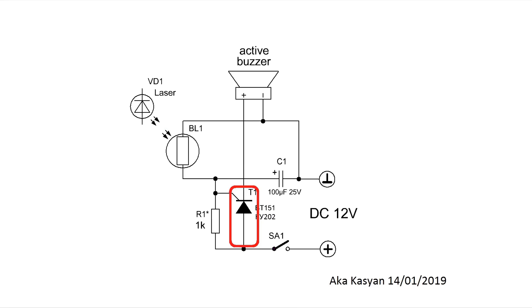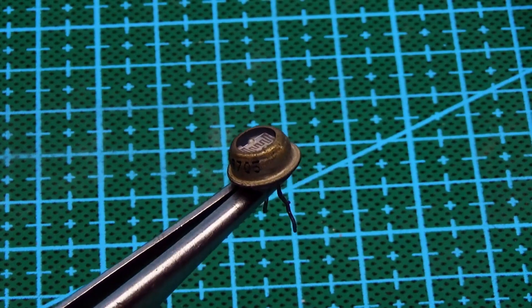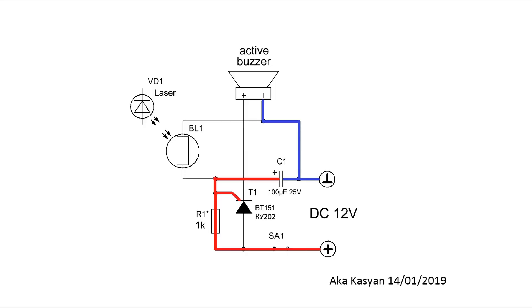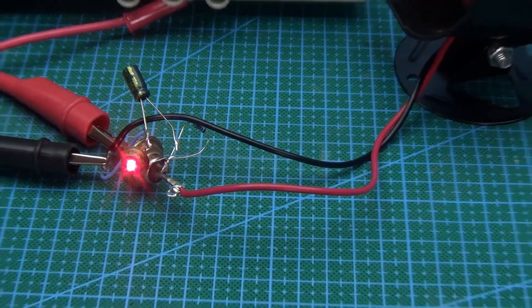The thyristor is securely closed because the resistance of the photoresistor is several hundred ohms. If the laser beam is interrupted even for a short time and the photodiode is not illuminated, its resistance sharply increases to tens and even hundreds of kilo ohms. In this case, an unlocking voltage will be applied to the thyristor through resistor R1 and it will activate and remain in this state even if the photoresistor is illuminated.